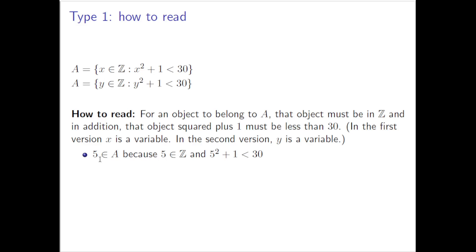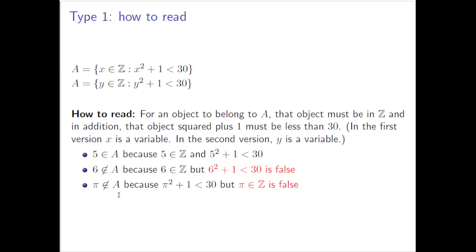For some examples: 5 is in A because 5 is in ℤ and 5² + 1 < 30. You could plug in 5 for x in both places x occurs, and ask: is 5 in ℤ true? Yes. Is 5² + 1 < 30 true? Yes. So 5 is in A. 6 is not in A because, while 6 in ℤ is true, 6² + 1 < 30 is false. Pi is not in A because although π² + 1 < 30 is true, the problem is that π in ℤ is false. I hope through this example and two non-examples you're getting a good sense of how to really read this set.